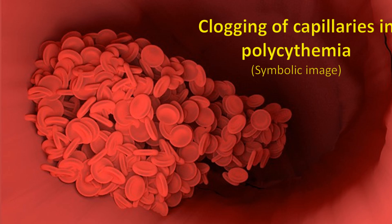Venesection can reduce viscosity of the blood and alleviate symptoms of hyperviscosity temporarily. But there is a chance of development of microcytes due to iron deficiency. Microcytes, being less deformable, can cause higher microvascular obstruction. The resulting renal hypoxia increases erythropoietin secretion and sets in a vicious cycle of decompensated erythrocytosis.